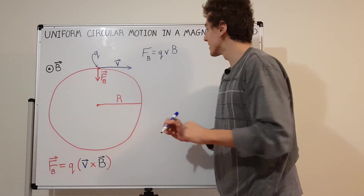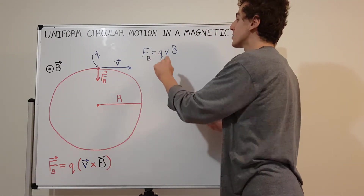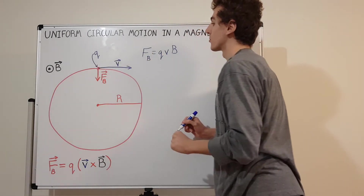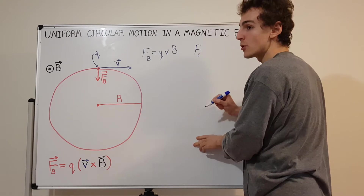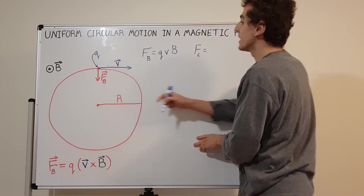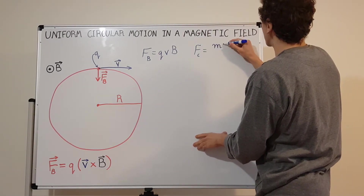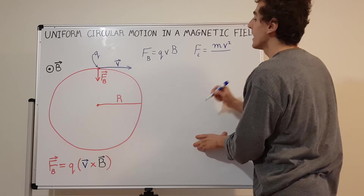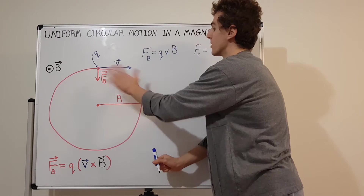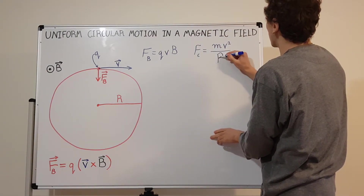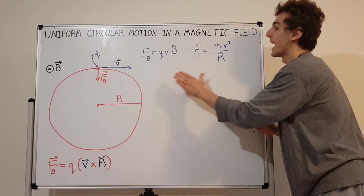This is a nice simplification that only works because all of these vectors are mutually perpendicular. We can see that this force is acting exactly like a centripetal force. So if this is both a magnetic force and a centripetal force, we can write another expression. The centripetal force is mass m times velocity squared divided by the radial distance r from the center — the radius of the circle. So we have mv squared over r as the centripetal force, and QVB as the magnetic force.